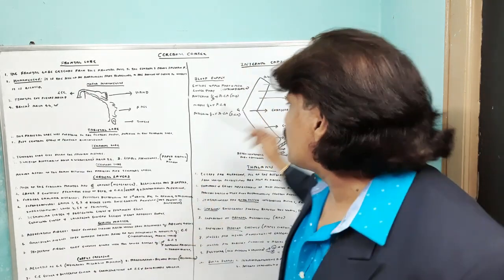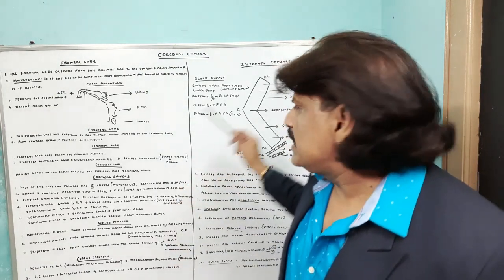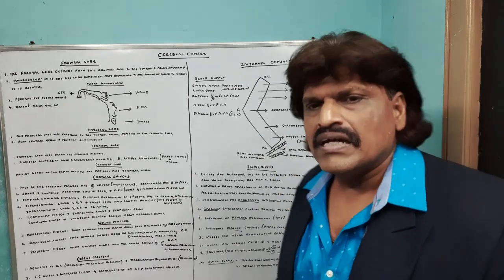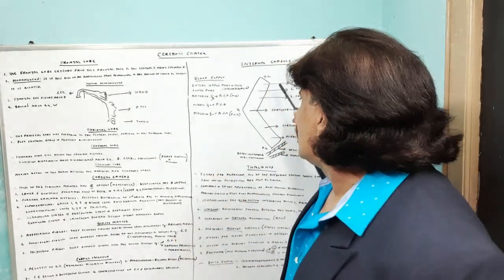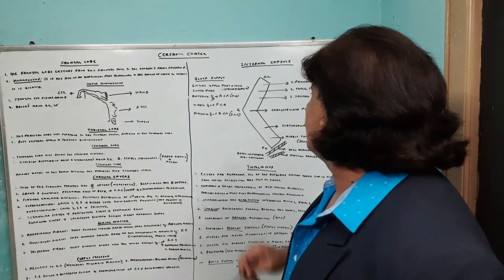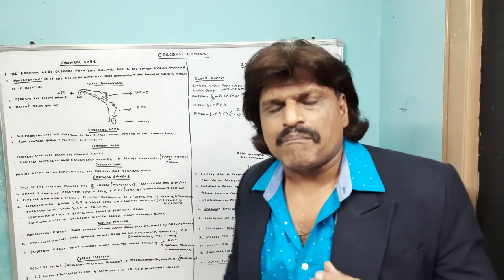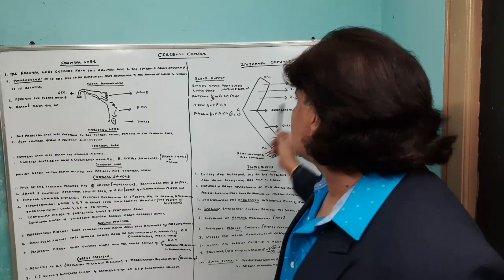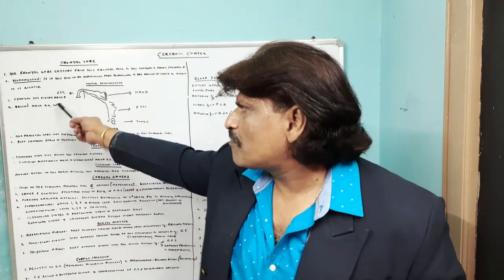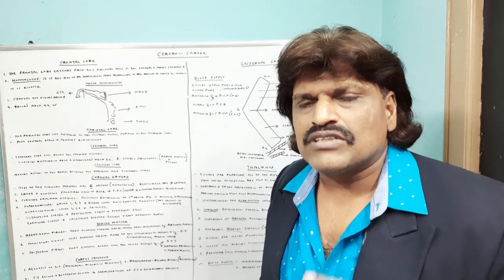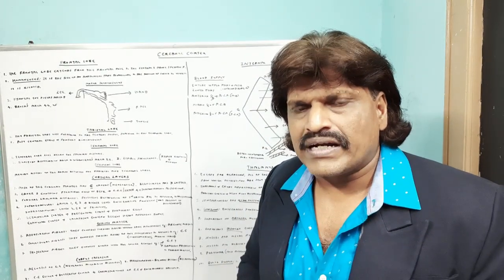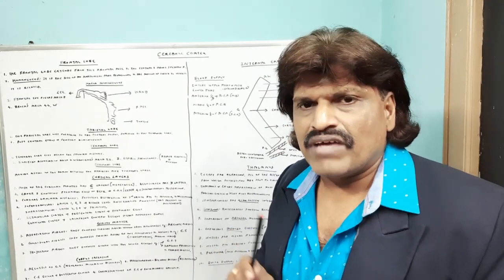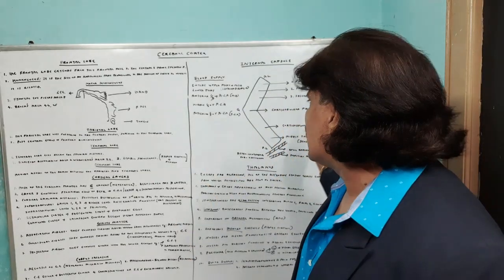The structures in the internal capsule: the anterior limb contains three important tracts. One is the frontopontine tract, which ultimately goes to the cerebellum. Second is the Papez circuit, involved in memory. Third is the horizontal gaze pathway coming from the frontal eye fields, area number eight.